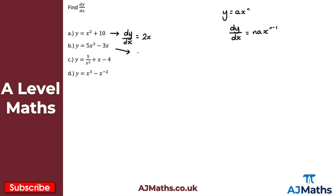For part b, finding dy/dx: 5x cubed gives 5 times 3 equals 15, so we get 15x squared. Then minus 3x — a constant times the variable we're differentiating with respect to — gives minus 3. So dy/dx equals 15x squared minus 3.